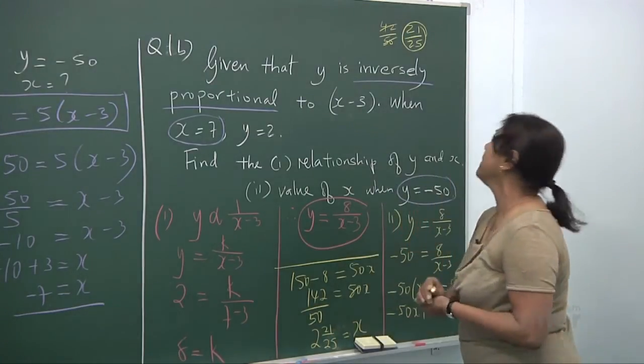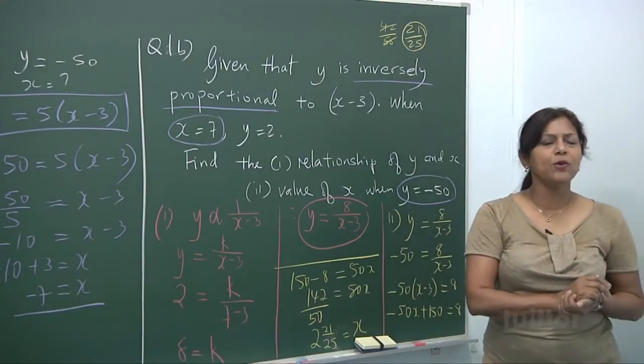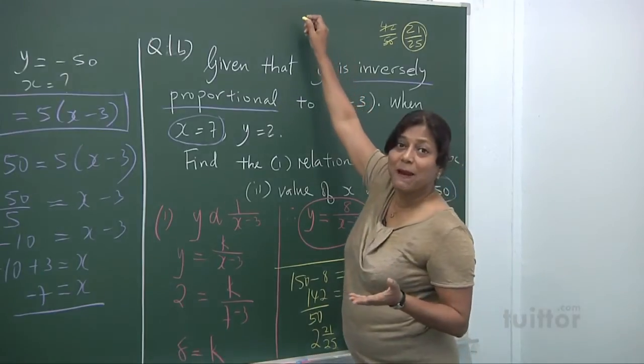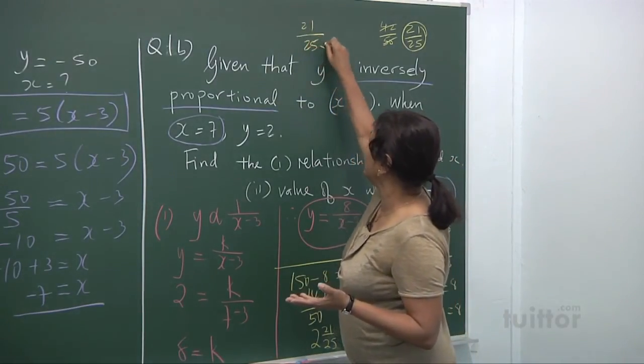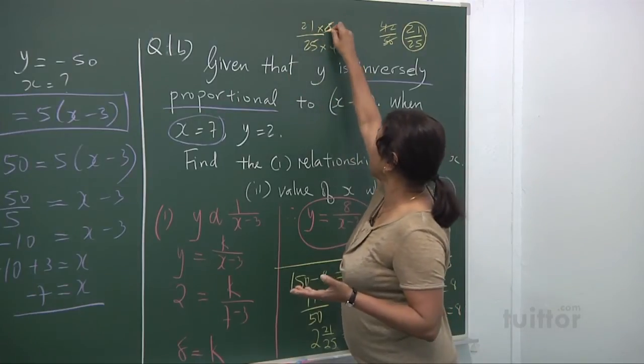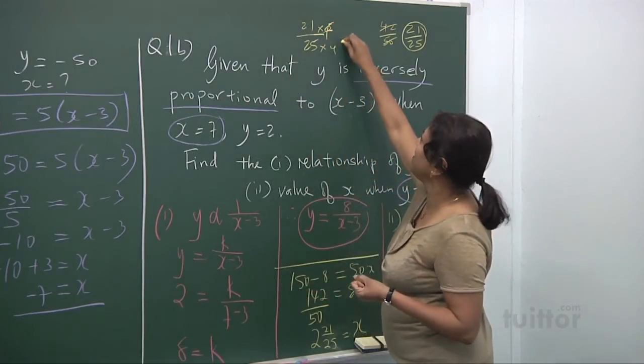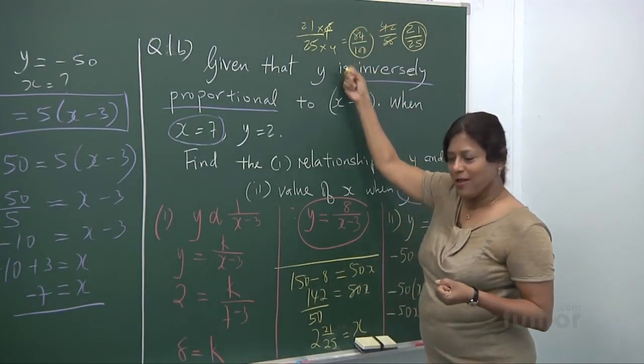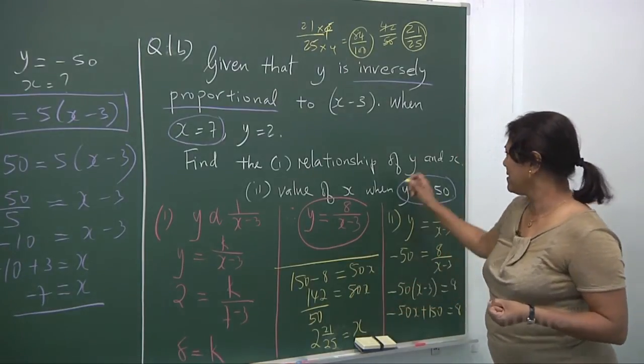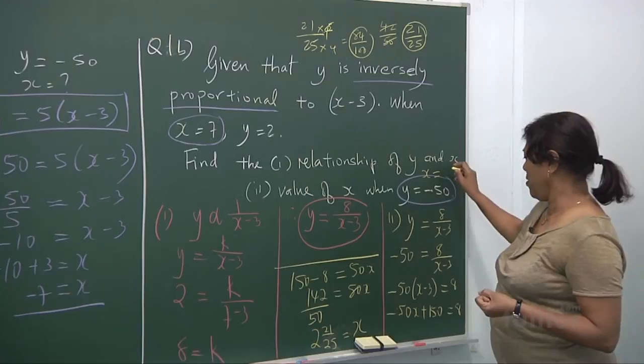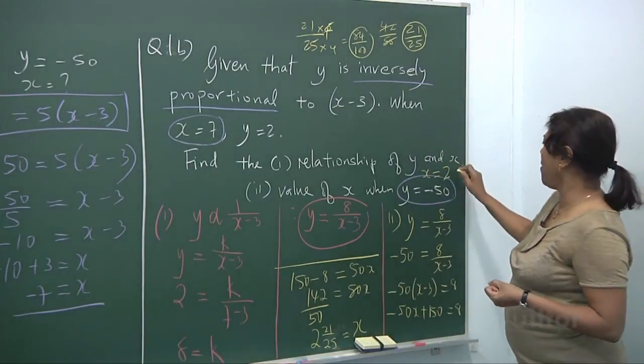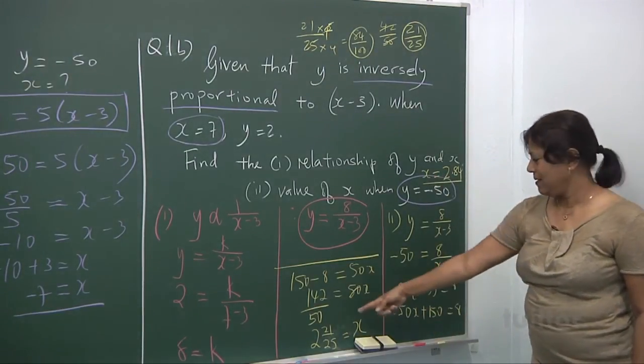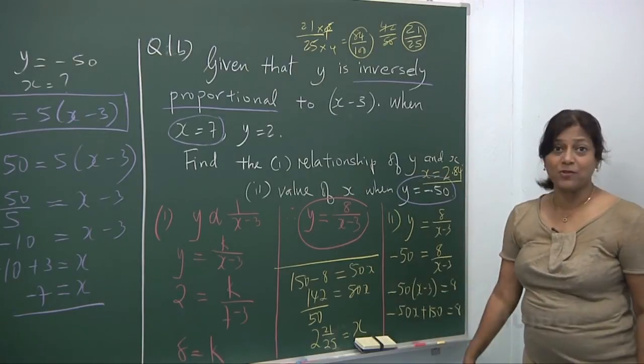So you can put it as 2 and 21/25. That's your x. Now, just out of curiosity. How do you change 21 out of 25 to decimal? What do you do? Yup. You multiply it up and down by 4. Excellent. Multiply by 4. So what do you get? You get 84 over 100. So 0.84. So x can be also expressed as, alright? x can be 2 wholes. And look at that. 0.84. If you want to express it in decimal. This is in, shall I say fraction?